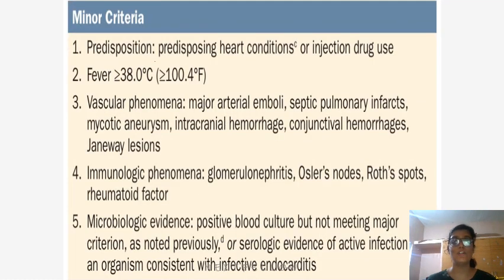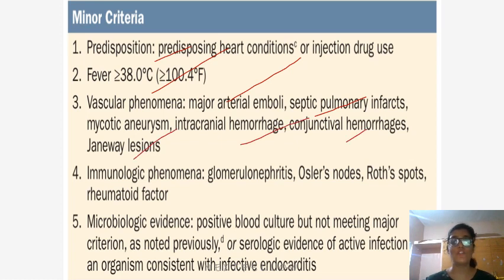Minor criteria include: predisposition such as high-risk heart conditions or injection drug use; fever greater than 100.4°F; vascular phenomena like major arterial emboli, septic pulmonary infarcts, mycotic aneurysm, intracranial hemorrhage, conjunctival hemorrhage, and Janeway lesions; immunologic phenomena like glomerulonephritis, Osler's nodes, Roth spots, and rheumatoid factor; and microbiologic evidence of a positive blood culture not meeting major criteria, or serologic evidence of active infection with an organism consistent with IE.